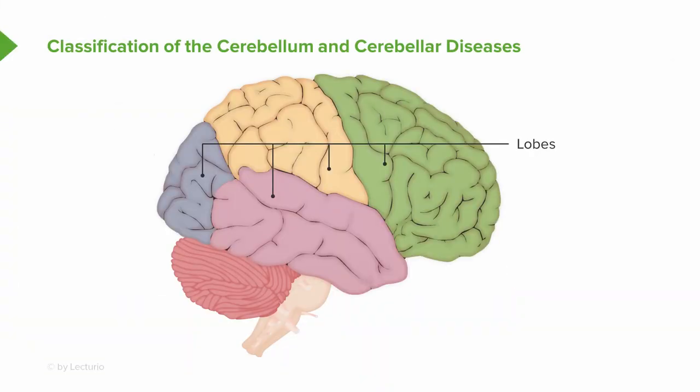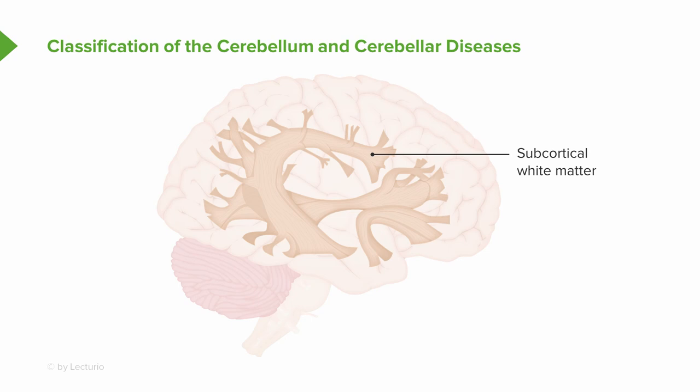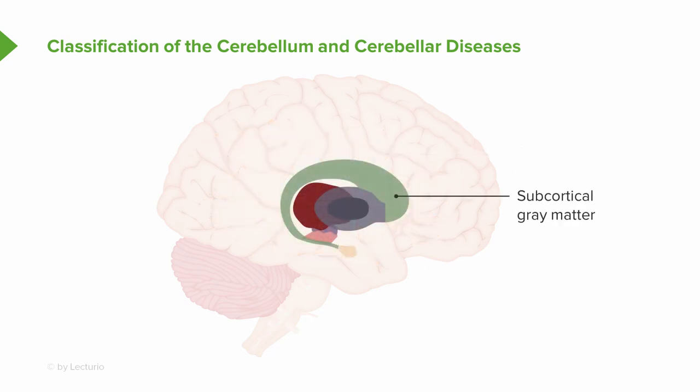When we think about the brain, the outermost area consists of the cerebral lobes — the cortex — including the frontal, parietal, occipital, and temporal lobes. Beneath the lobes is the subcortical white matter, and the cerebellum is organized similarly. Going deeper still is the subcortical gray matter: in the brain, that's the caudate, putamen, and globus pallidus, as well as other accompanying structures — and we'll see similar organization within the cerebellum.